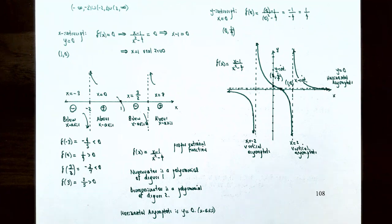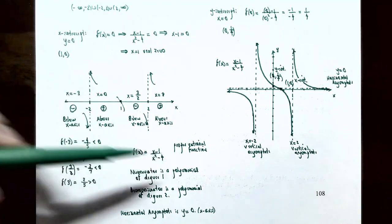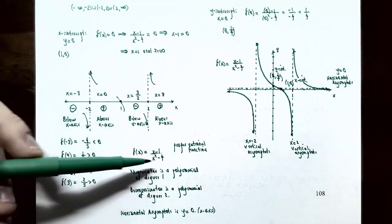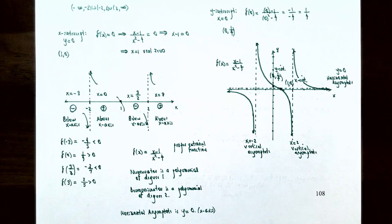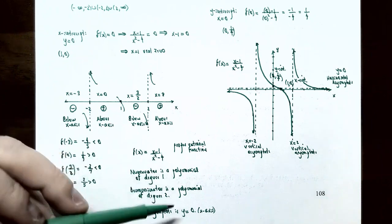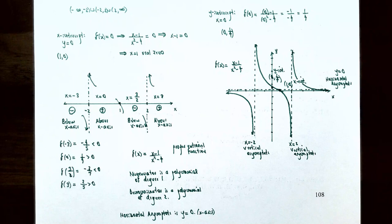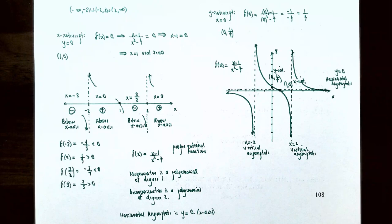Now let's find the horizontal asymptote. f(x) = (x - 1) / (x² - 4) is a proper rational function because the degree of the numerator (1) is less than the degree of the denominator (2). So the horizontal asymptote is y = 0, the x-axis. As x → ±∞, the y values approach 0. The graph crosses the horizontal asymptote at the x-intercept (1, 0).